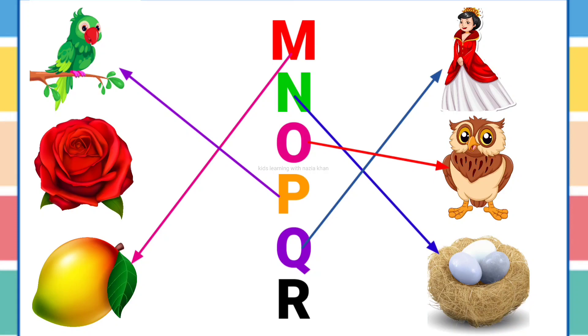Q is for queen. Q, Q, queen. R is for rat. R, R, rat.